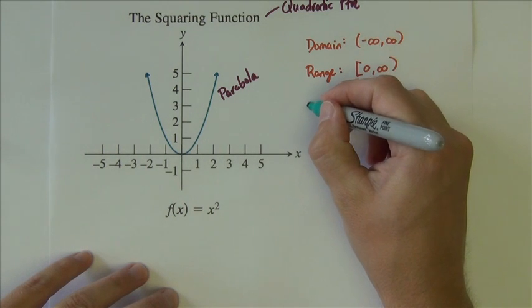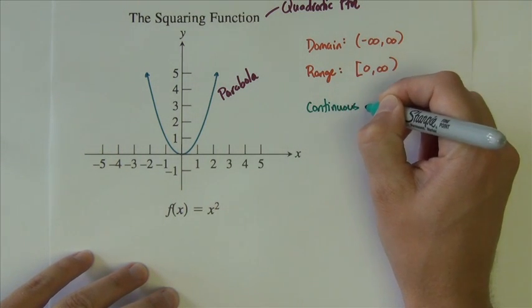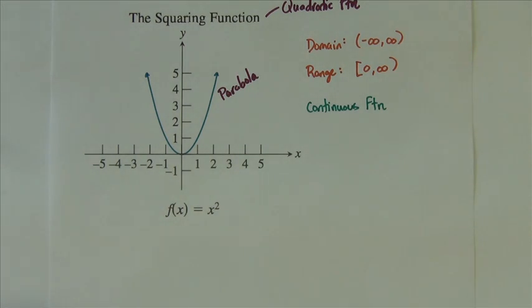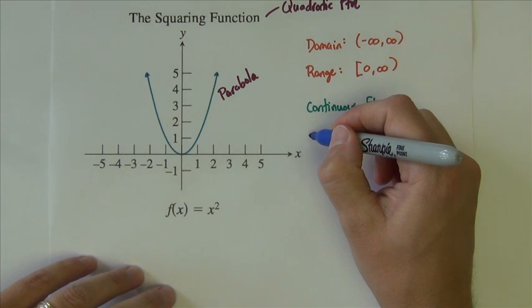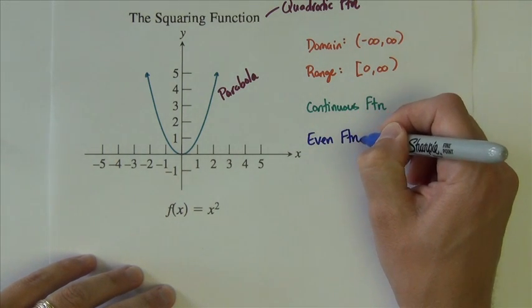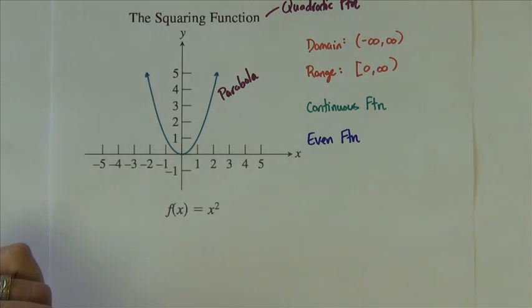All squaring functions are continuous, so it is a continuous function. This particular squaring function, the basic one, is an even function, meaning that it has symmetry about the y-axis. If we were to fold on the y-axis, the points would match up on either side.